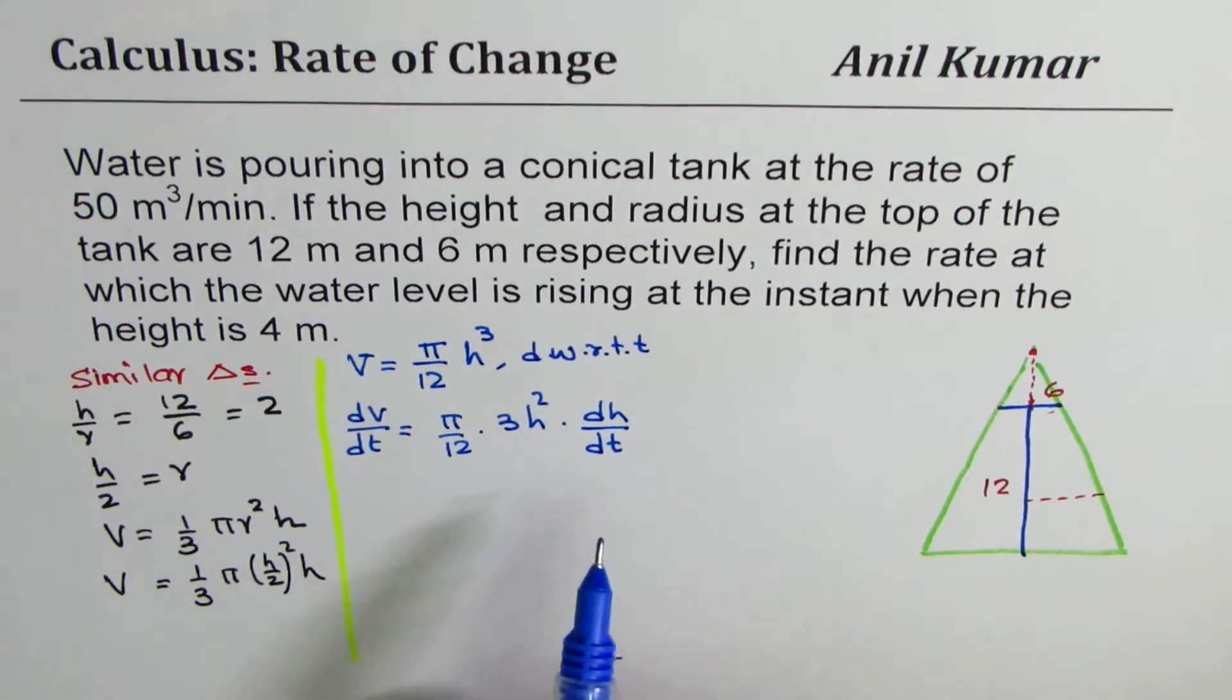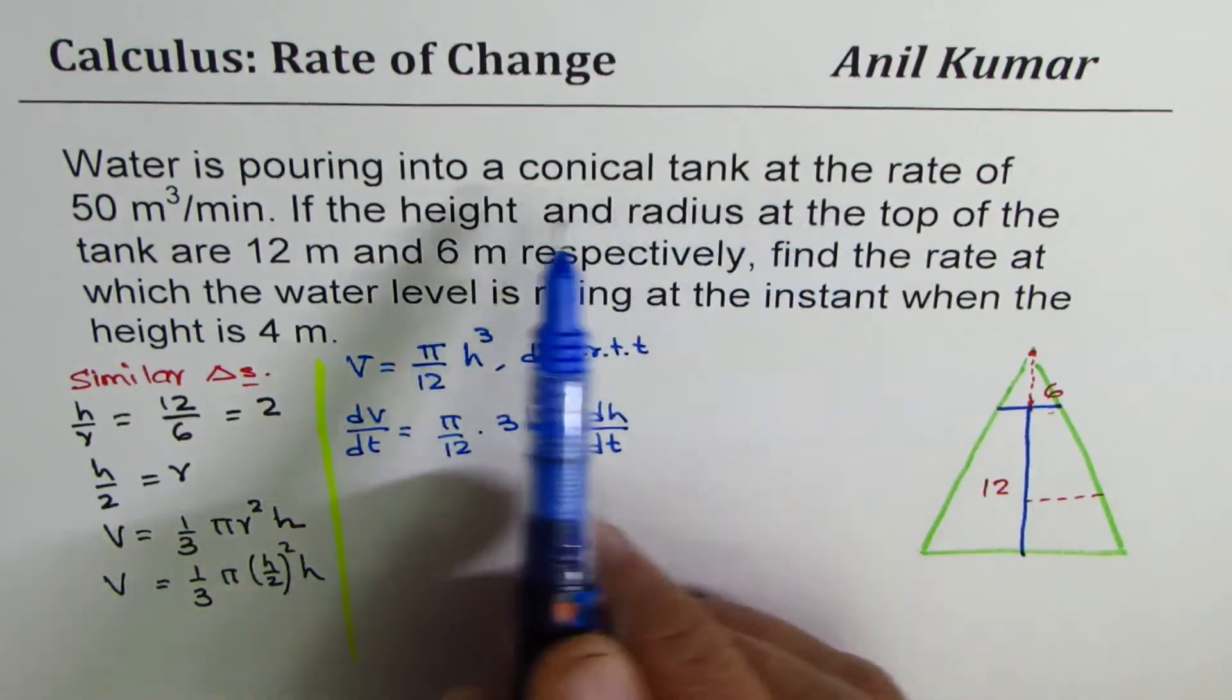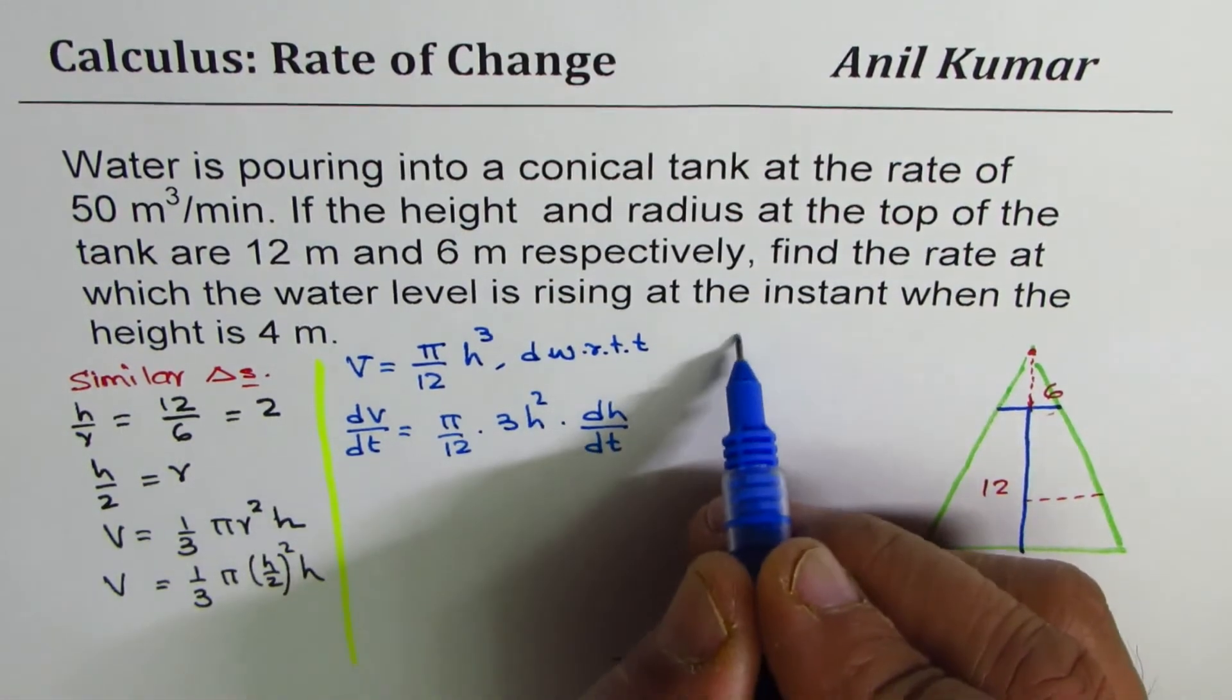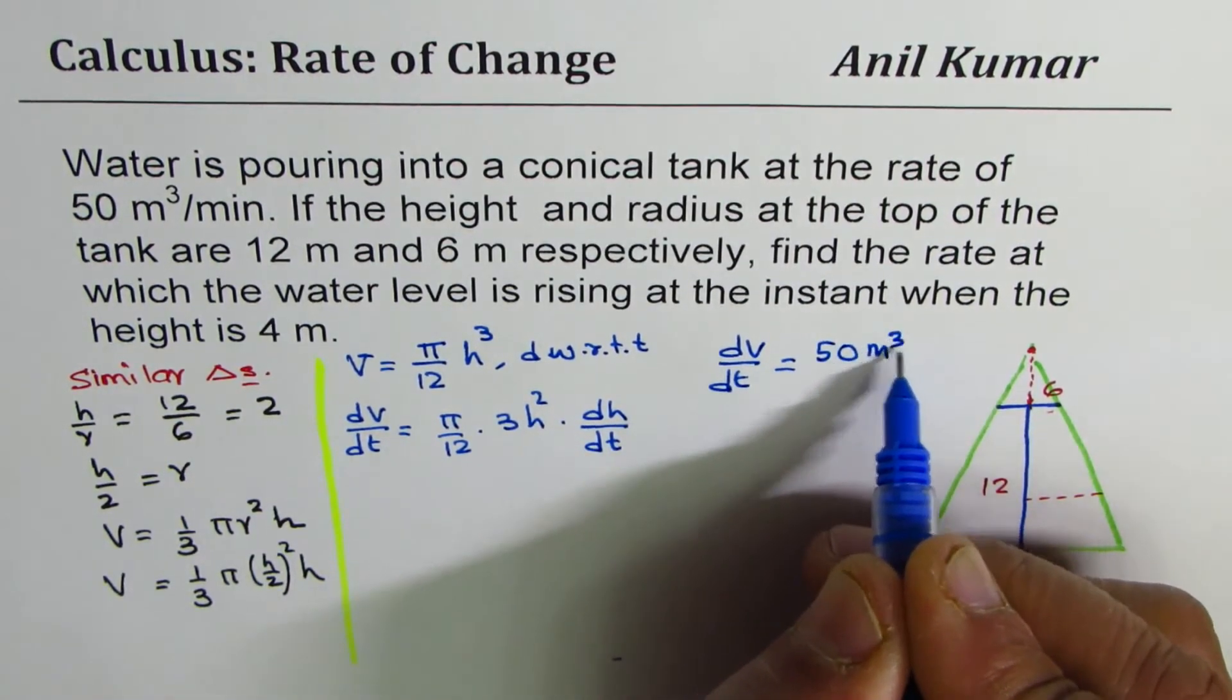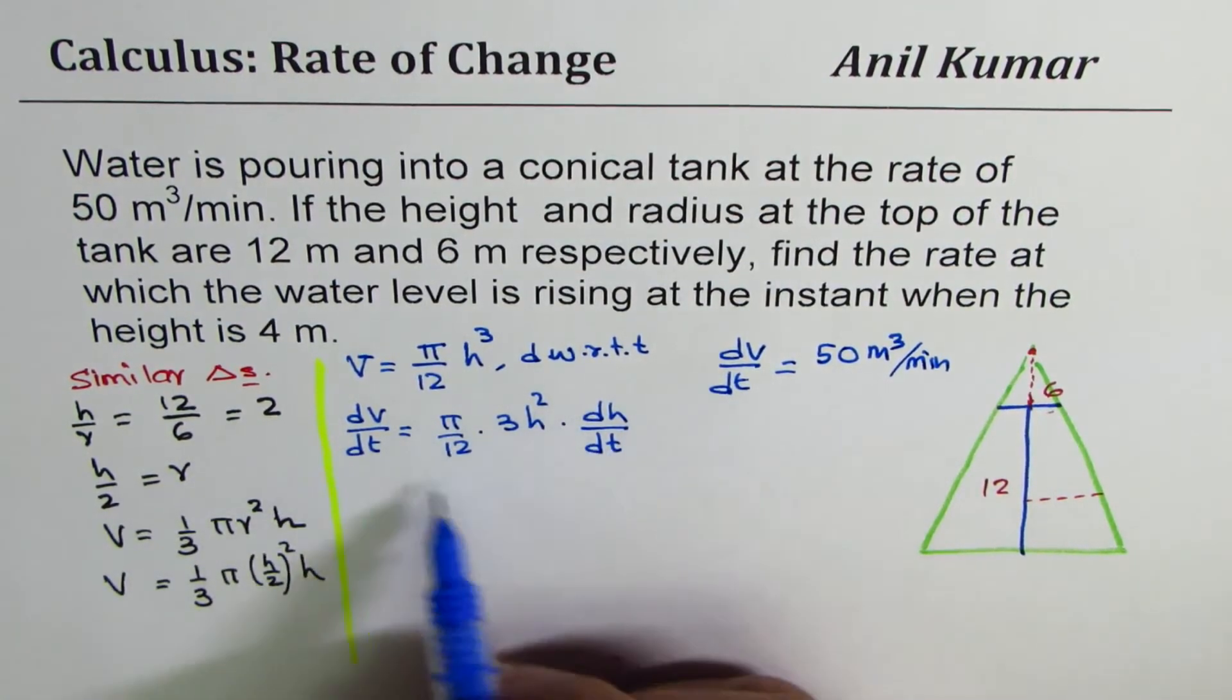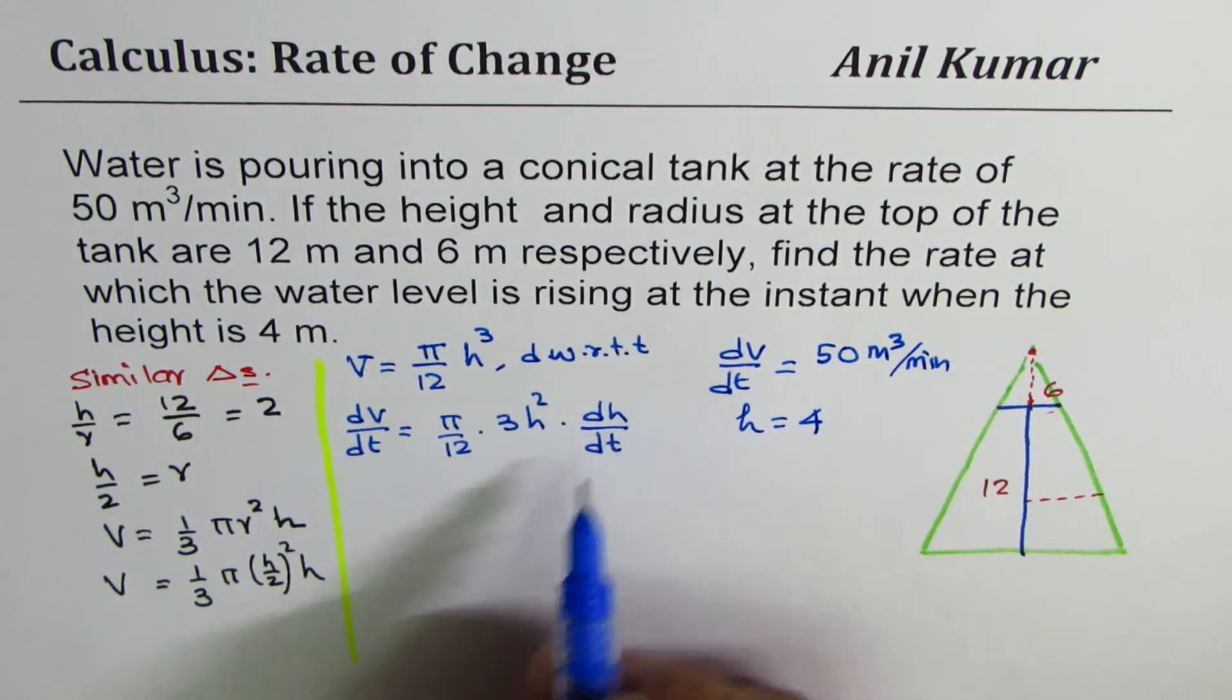Now, I think it's simple. You can find height, rate of change of height from the given condition. You already know that conical flask is being filled at 50 meter cube per minute. So in this example, we are given dv dt is constantly filled at the rate of 50 meter cube per minute. So we know dv dt. Now, we need to find this rate of change when height is 4.